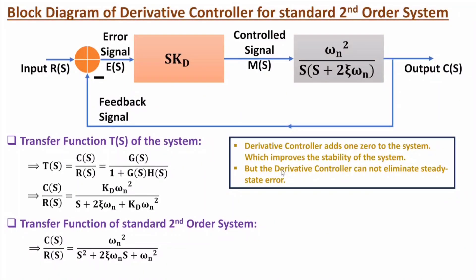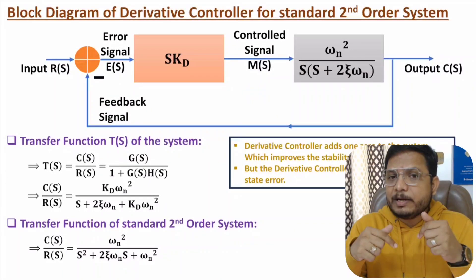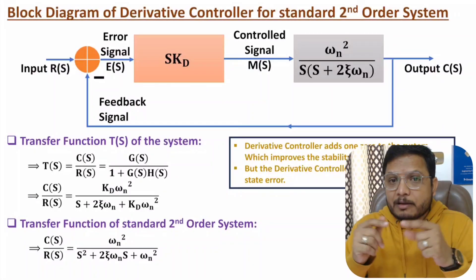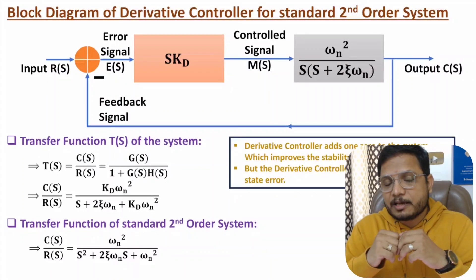One important note: with derivative controller there are issues of steady state error. The derivative controller cannot optimize steady state error — it can optimize stability but not steady state error. In contrast, the integral controller eliminates steady state error, but the integral controller has issues with stability.